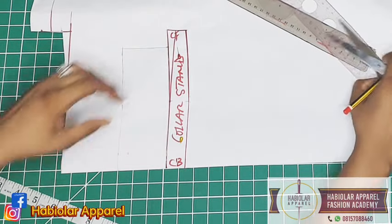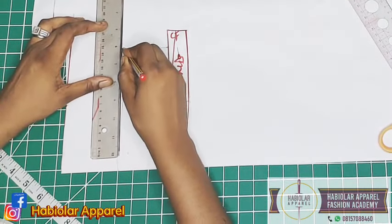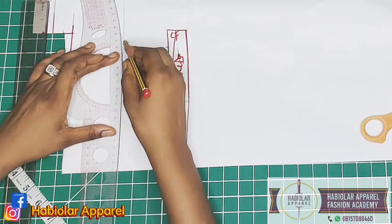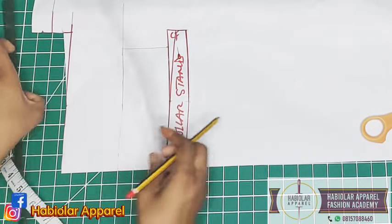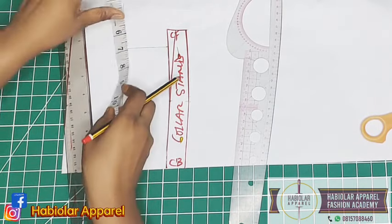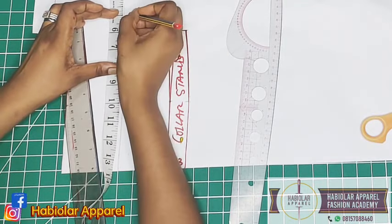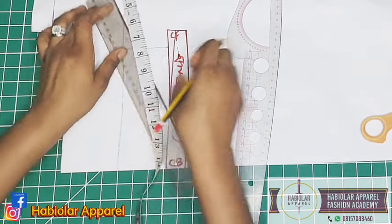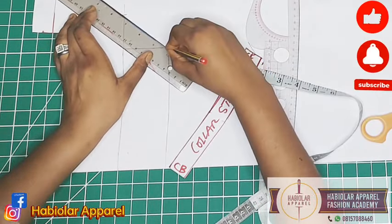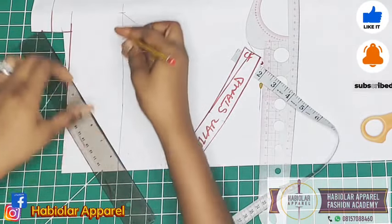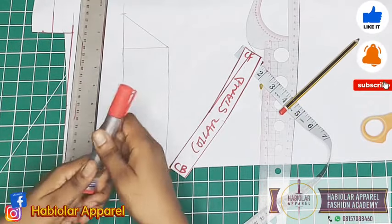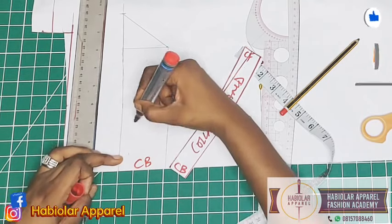The next thing is to extend this. Then I can mark like two to three inches, so I will just mark two inches and connect it back. I can remove this one now and connect it back to this point. This is my main collar while this is the collar stand. This is the center back, this is the main color.